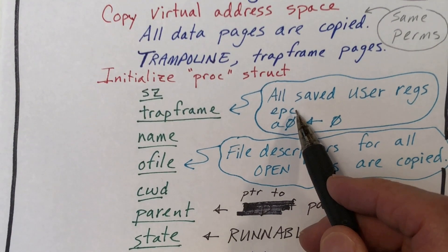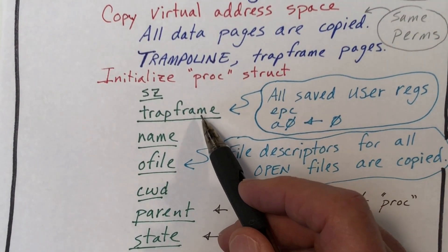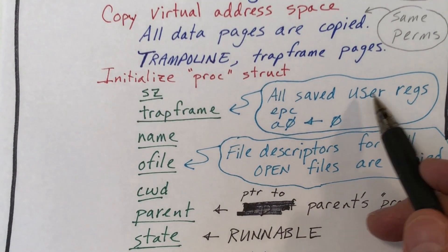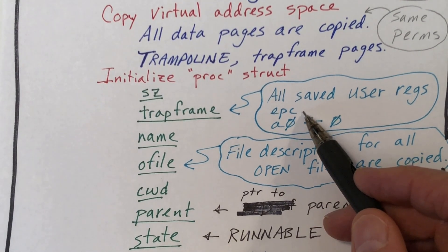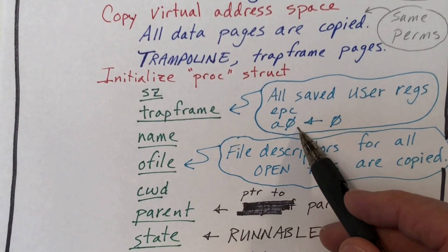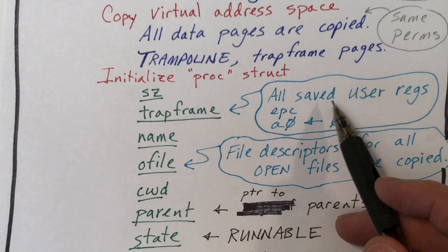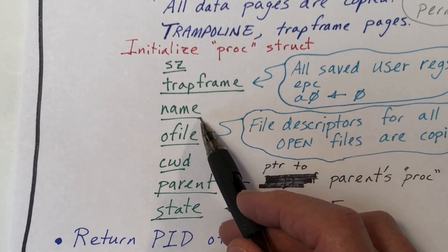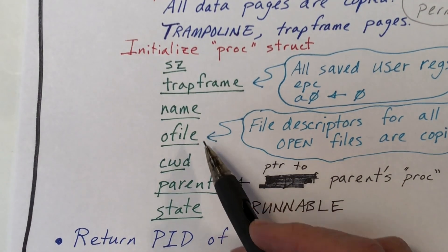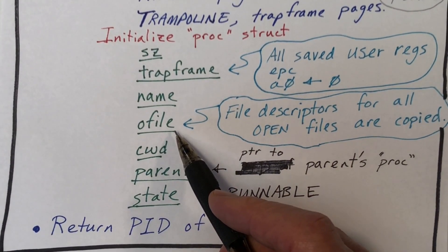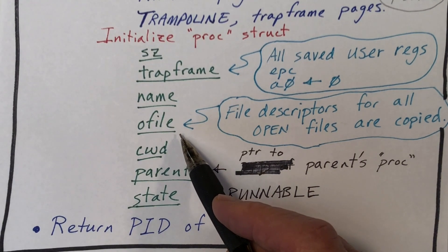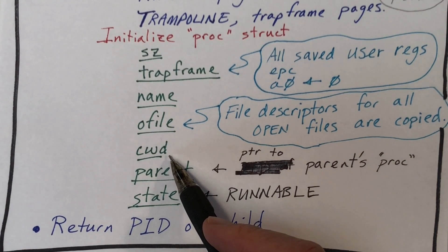By copying the trap frame, the child process, when it's scheduled again and runs in user mode, will have exactly the same values in all of its registers and will begin executing at the same spot — namely, directly after the ecall instruction that did the fork system call. Then we modify register A0 to set it to zero so that the child process will see a return value of zero. Each process has a name, and we copy the name field so the child process will be given the same name as the parent. Each process has a number of open files, and we copy all of the file descriptors for open files in the parent process into the child process, so any file that was open in the parent will be open in the child. We also copy the current working directory so the child will be in the same working directory.